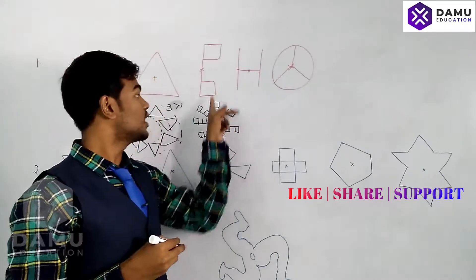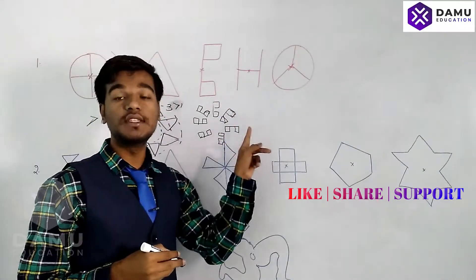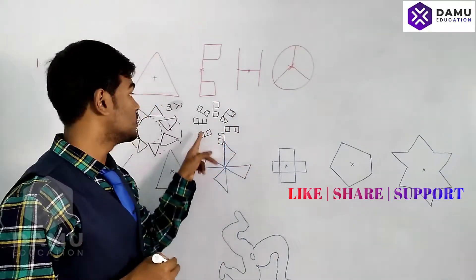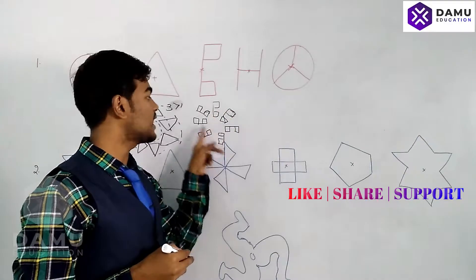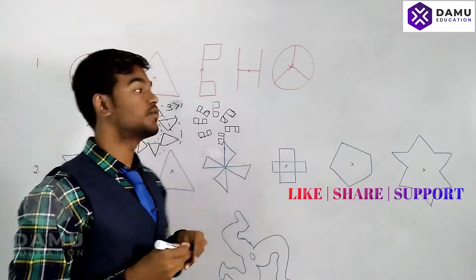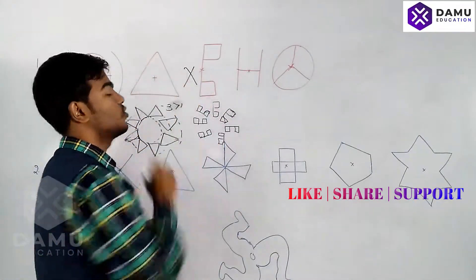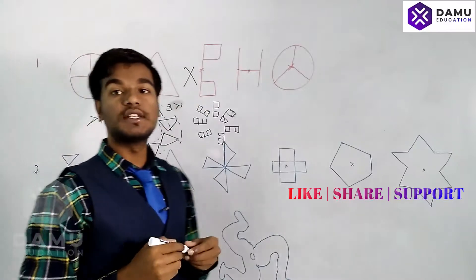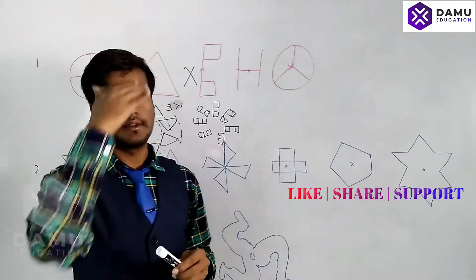For this shape, if you rotate it completely it will come around, but you cannot see this shape looking the same at any point. So for this shape there is no rotational symmetry — there is no order of rotation.